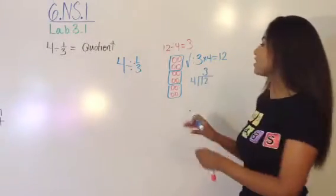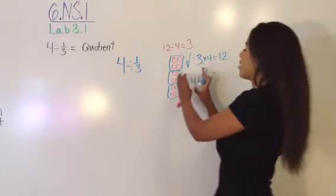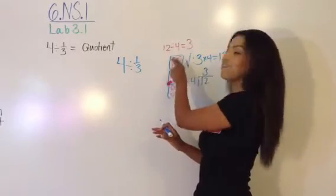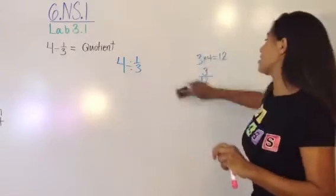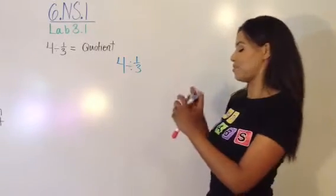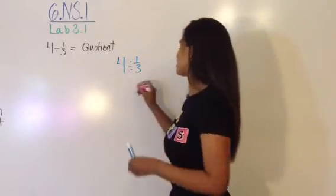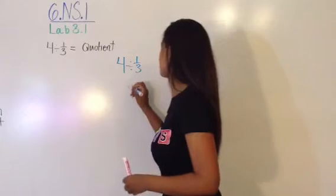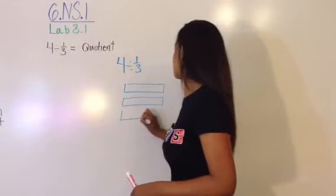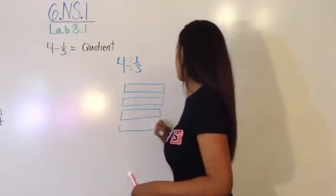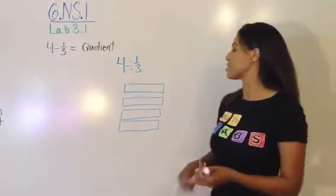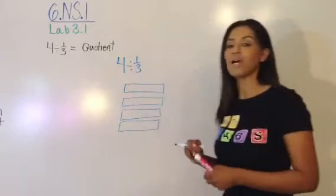So we're going to take what we already know and now apply that to division of fractions. You should be familiar with using whole numbers and dividing. Now we're going to practice with dividing fractions — in this case, a whole number divided by a fraction. We're going to start with how many wholes — four. I like to use bars because we're going to divide these into thirds, and it's a much easier visual.